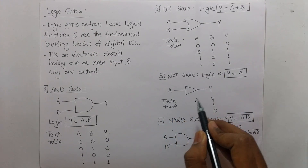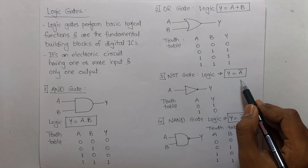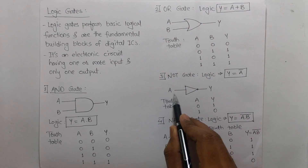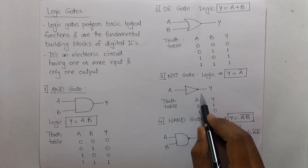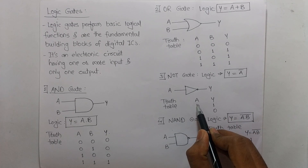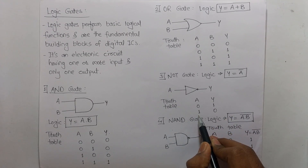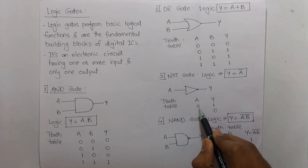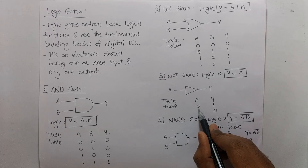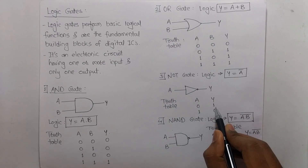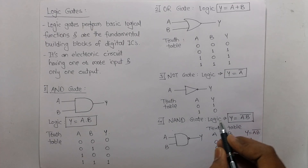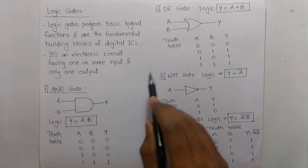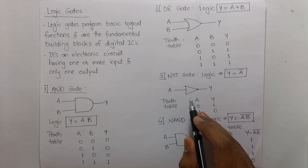Next is the NOT gate. The logic of NOT gate is the inverse of the input. There is only one input A and one output. The two possibilities of input are 0 and 1, and Y is the inversion of the input value. AND gate, OR gate, and NOT gate are called basic gates.